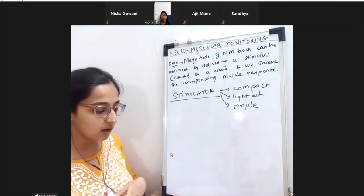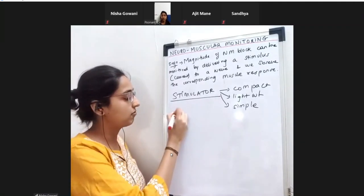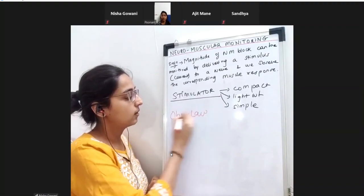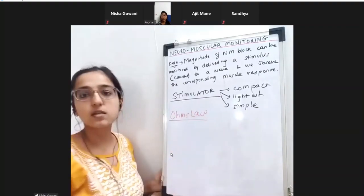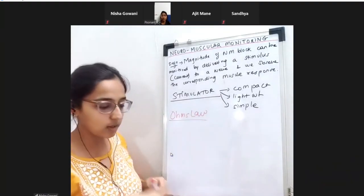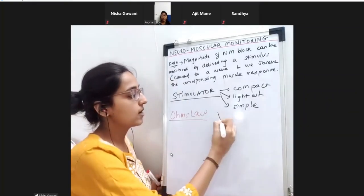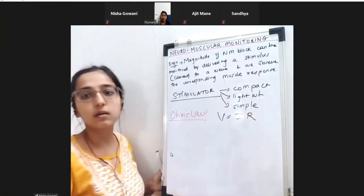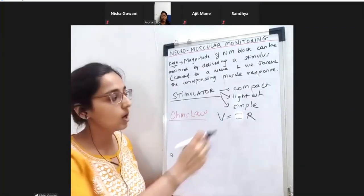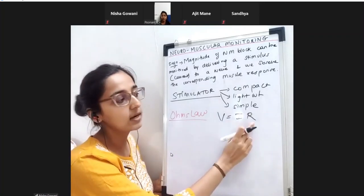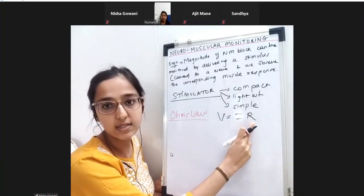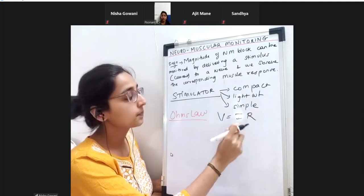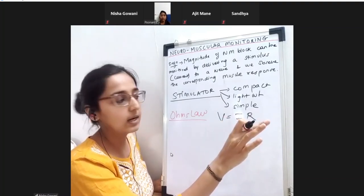By Ohm's law - V equals I into R - V is voltage, I is current, and R is the resistance. This is simple physics for any electrical conduction.